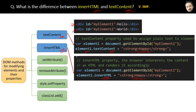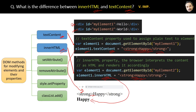And this is the result in the browser. If you notice, in the case of textContent, the exact same plain text has been updated in the element. But in the case of innerHTML, the browser interprets the content as HTML, not just plain text. Therefore, the strong HTML tag will make the word 'happy' bold and in strong HTML format. So that is the difference.